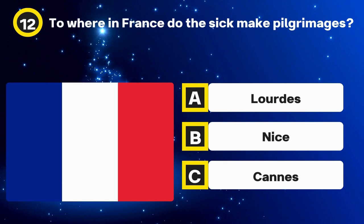Question 23. Eric Arthur Blair was the real name of which author? Options: George Orwell, J.K. Rowling, Ernest Hemingway. The answer: George Orwell.